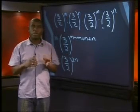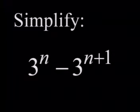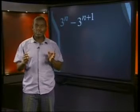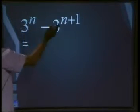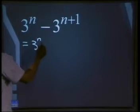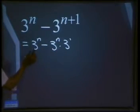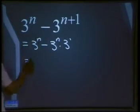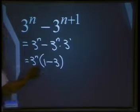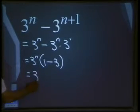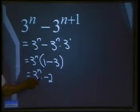One last challenge: simplify 3 to the power of n minus 3 to the power of n plus 1. What we've used so far doesn't help much here, but look — we have two terms and we can find a common factor between them. We have 3 to the power of n, and 3 to the power of n plus 1 can be written as 3 to the power of n times 3 to the power of 1. Taking out the common factor of 3 to the power of n, we are left with 1 minus 3, which equals minus 2. So the answer is 3 to the power of n times minus 2.